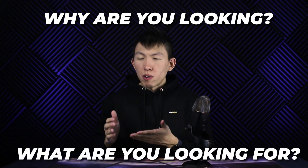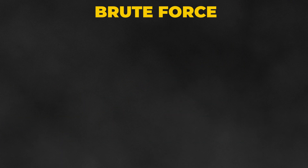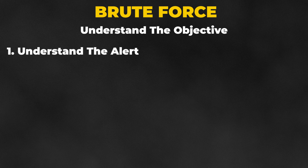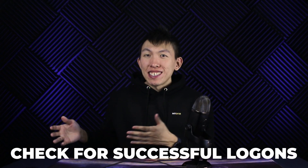What are you trying to look for, and why are you trying to look for that specific thing? Taking the brute force example: if you receive a brute force alert, you want to understand the objective by first understanding the alert — it is where someone or something is trying to authenticate to an account using various different password combinations. Knowing that, what are you trying to look for? If somebody is trying to break into your house, you'd want to know if they got in. You'll want to check for any successful logons from the account to see if they were able to log in.